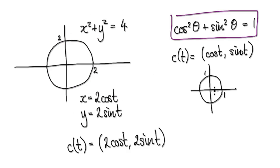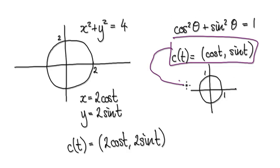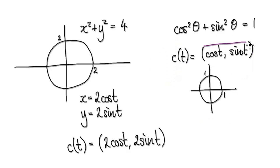If you have a unit circle and the angle is theta, then the height here would be given by sine theta, and the length here would be given by cos theta. If you get a graph plotter and plot this, it will give you a circle of radius 1.